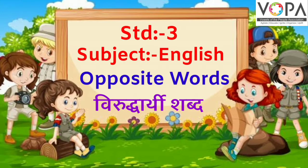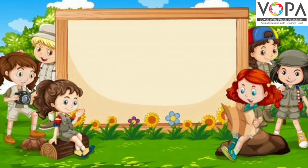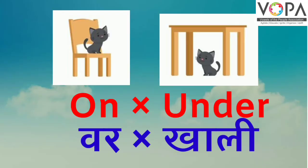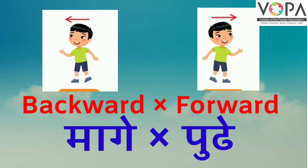Standard 3rd Subject English Opposite Words, Viruddharti Shabda. Unit No. 5, Page No. 26-27. On — Opposite — Under (Var Viruddha Khali). Backward — Opposite — Forward (Maage Viruddha Pudhe).